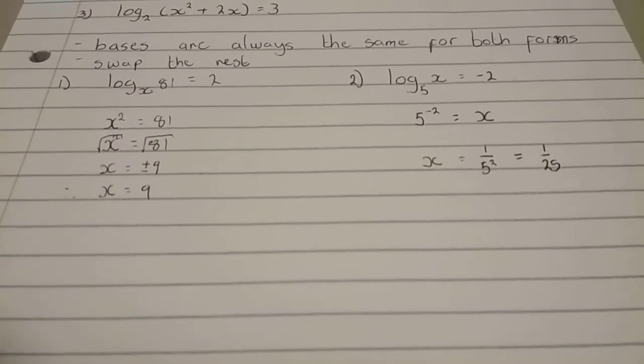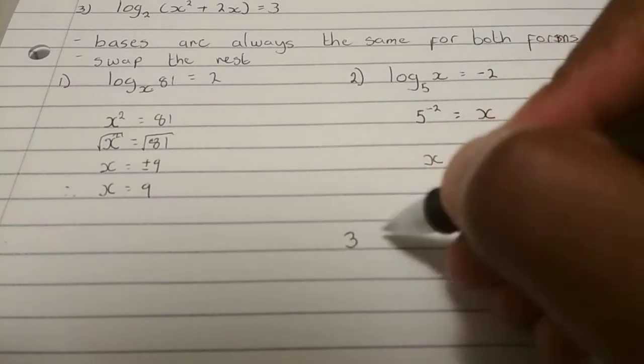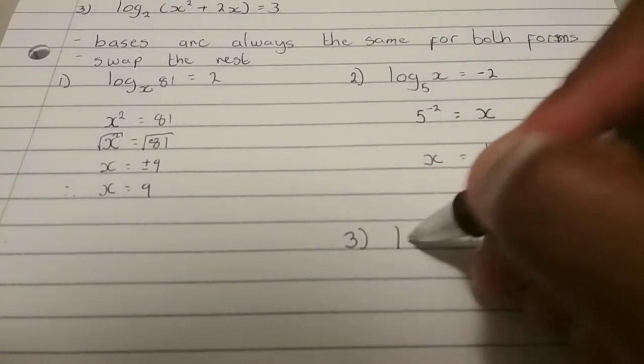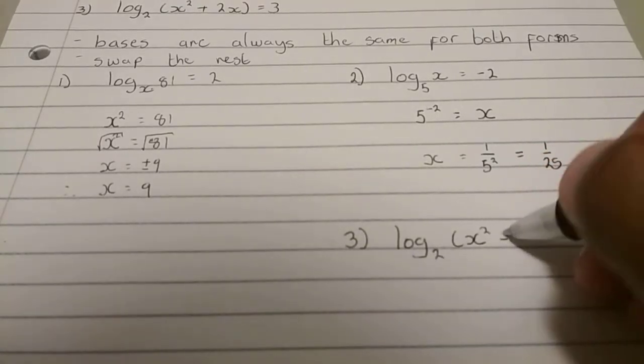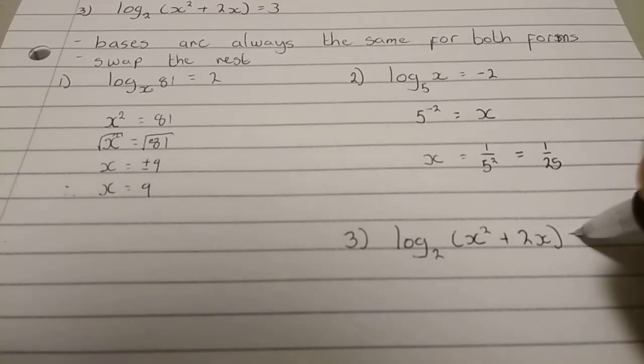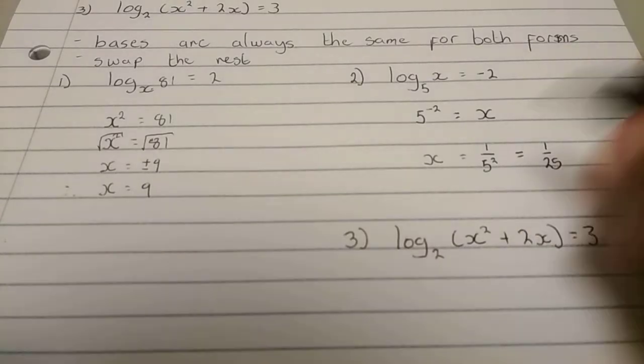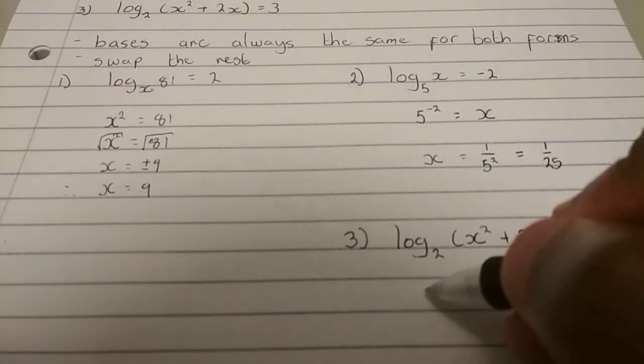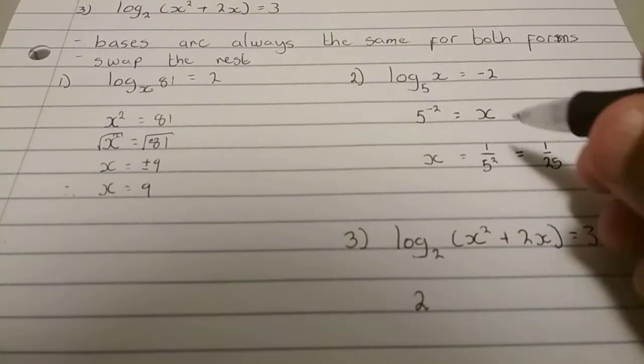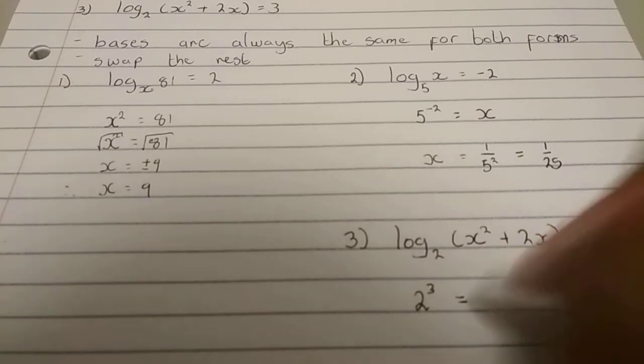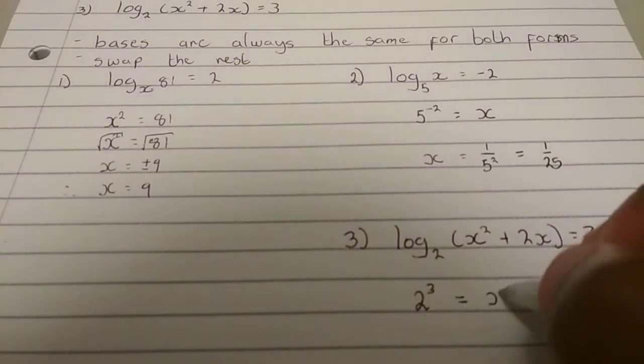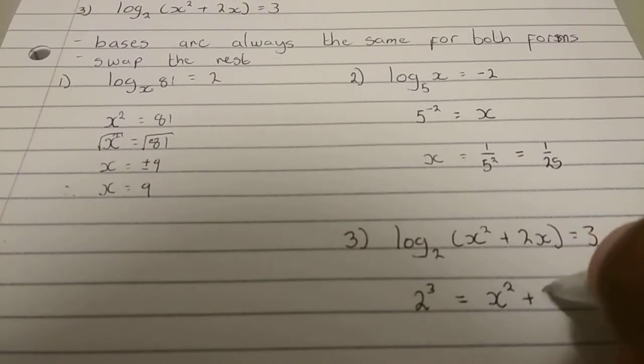And then the last one that we're going to do, which is number 3. We have log 2 x squared plus 2x is equals to 3. So that's one term. The rule still applies. Bases are the same. The base is 2. And then, secondly, swap the two. Swap what's left. So the 3 comes up there. And then that just becomes x squared plus 2x.